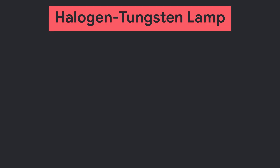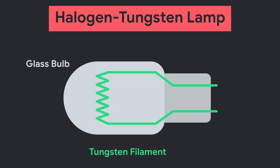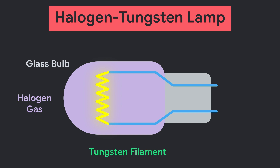The halogen tungsten bulb contains a tungsten filament sealed inside a glass bulb which contains halogen gas, so it is called a tungsten halogen bulb. Whenever it is subjected to electric current, the tungsten filament emits light according to its physical property, and the halogen helps to maximize light production while protecting the filament from high-temperature burn. Some cars use a two-filament bulb which contains two filaments inside a single glass bulb.